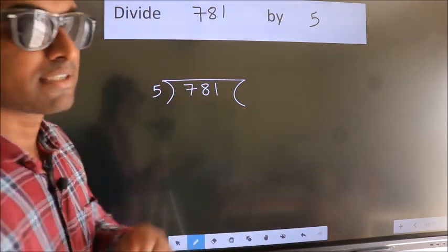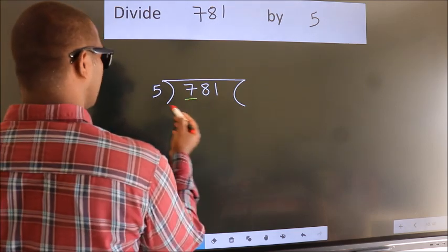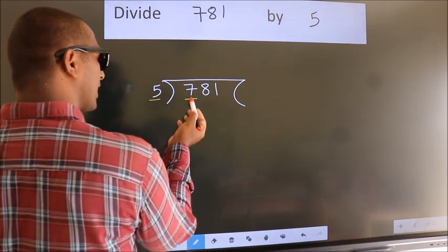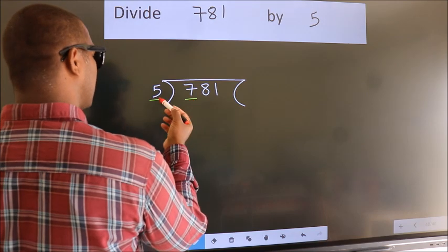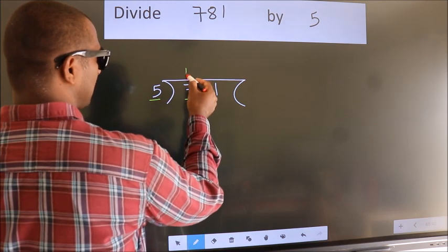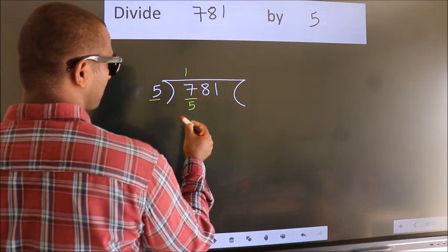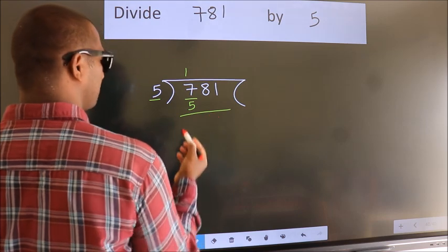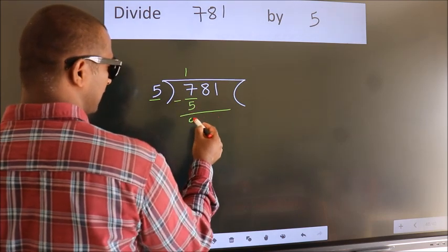Next, here we have 7, here 5. A number close to 7 in the 5 table is 5 once 5. Now we should subtract. We get 2.